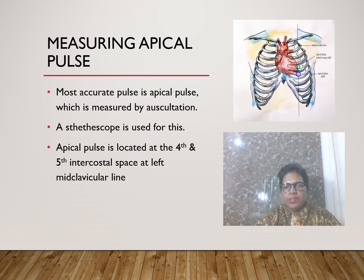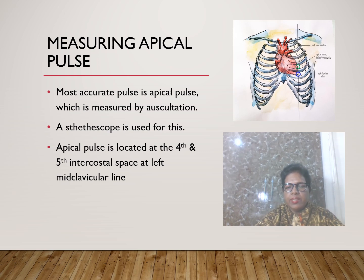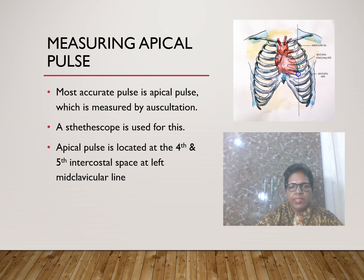The most accurate pulse is the apical pulse, measured by auscultation using a stethoscope directly over the heart. The apical pulse is located at the 4th and 5th intercostal space at the left mid-clavicular line.